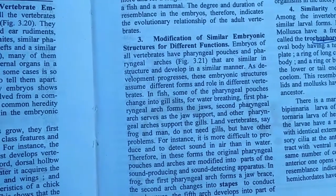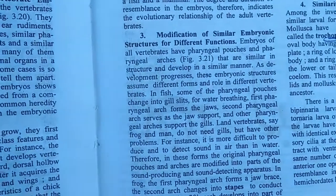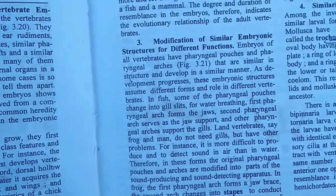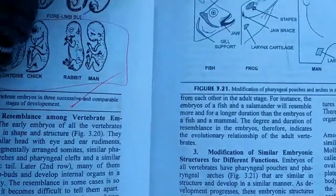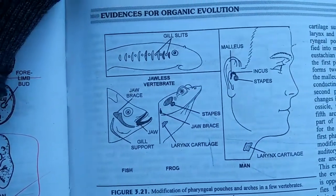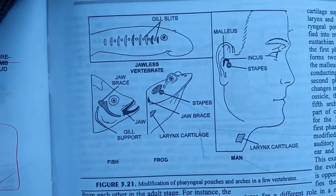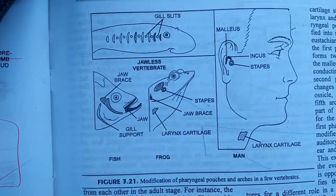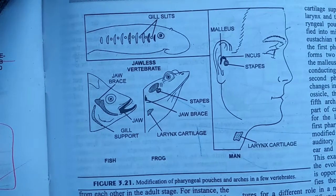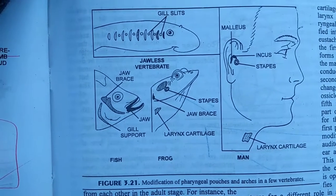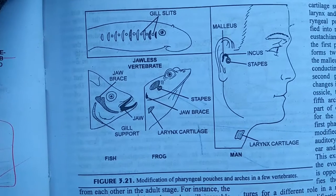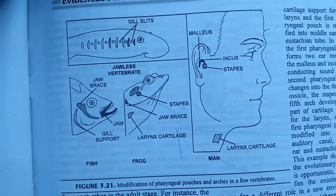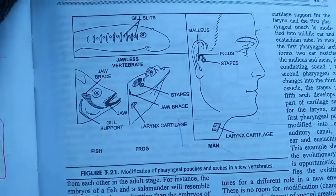Next is the modification of similar embryonic structures in different functions. You can see that if I discuss about the modification of the pharyngeal gill pouches — gill slits in all vertebrates — in the fish it becomes the gills. In the frog it becomes the larynx cartilage and stapes. And in man it is found in the larynx, the sound box. So it is the modification of the gill pouches.